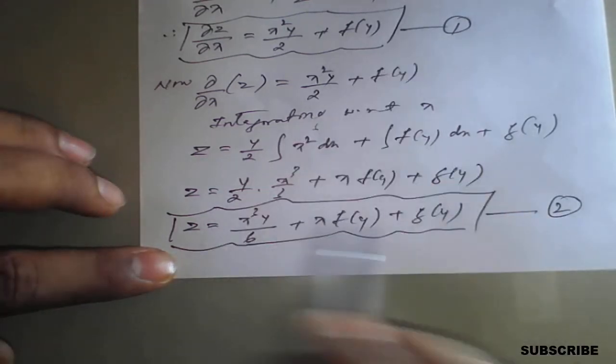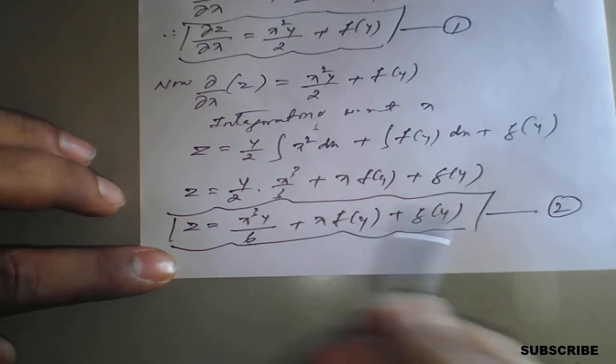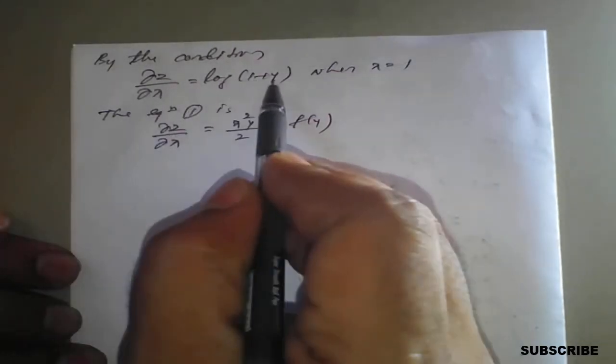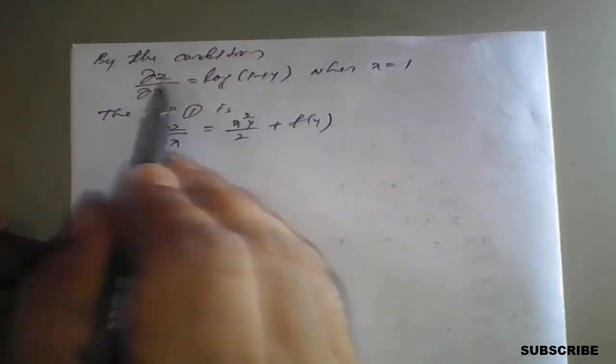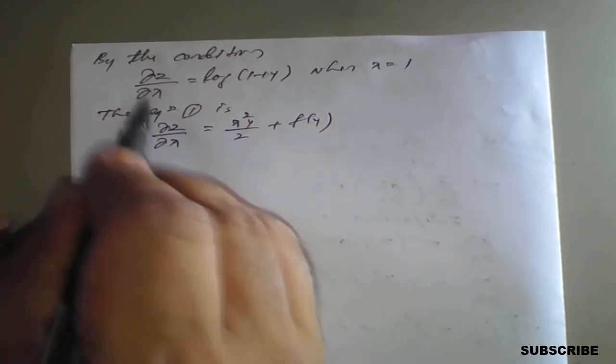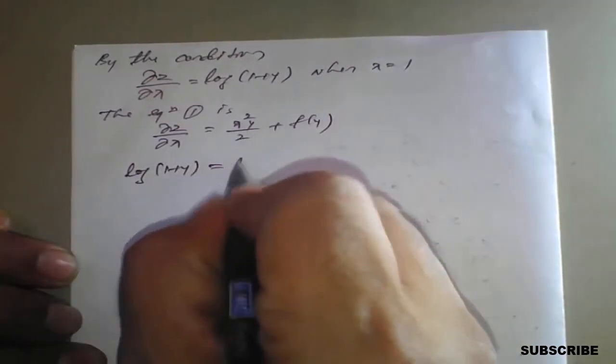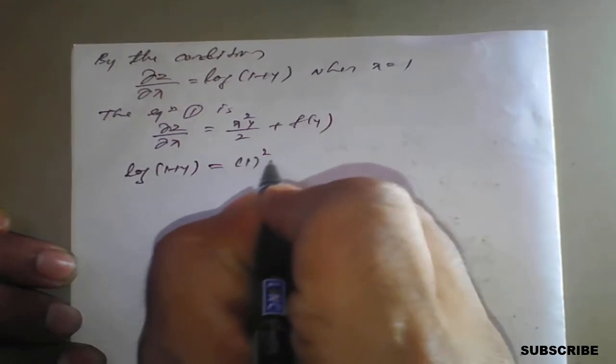Now we solve using the two conditions. Applying the first condition: ∂z/∂x = log(1+y) when x = 1. Substituting into Equation 1: log(1+y) = (1)²·y/2 + f(y), which gives log(1+y) = y/2 + f(y).